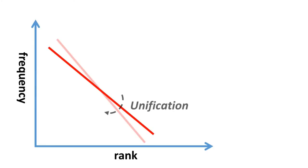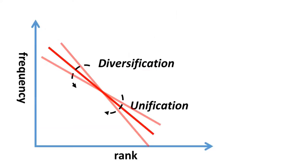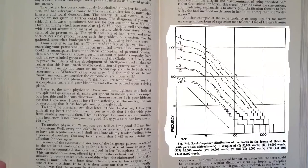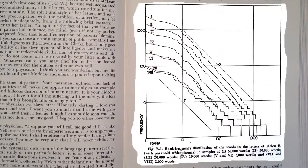So we can think of the force of unification as twisting the line towards the vertical, and the force of diversification as twisting the line towards the horizontal. The slope of 45 degrees represents a balance between the two opposing forces, and any deviations from it imply some kind of imbalance. For example, the writings of schizophrenics produce lines steeper than the expected 45-degree slope, with an excess of unification.